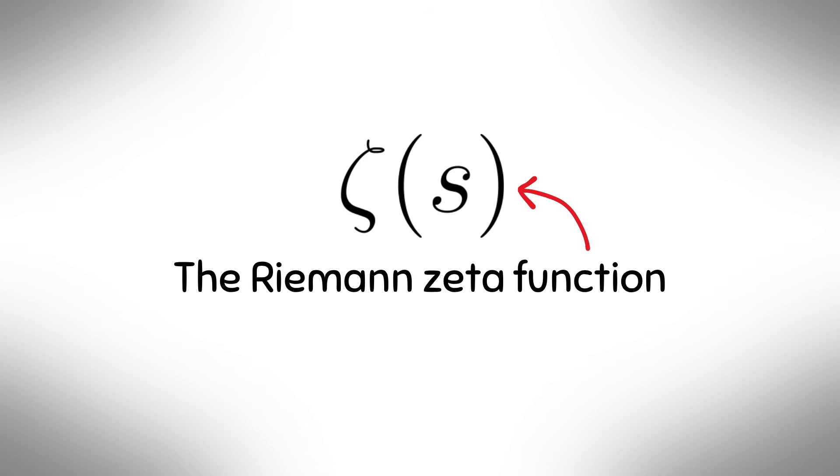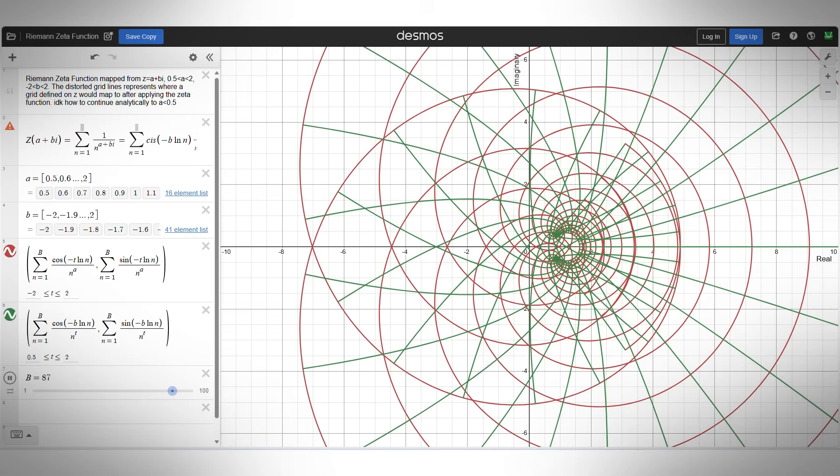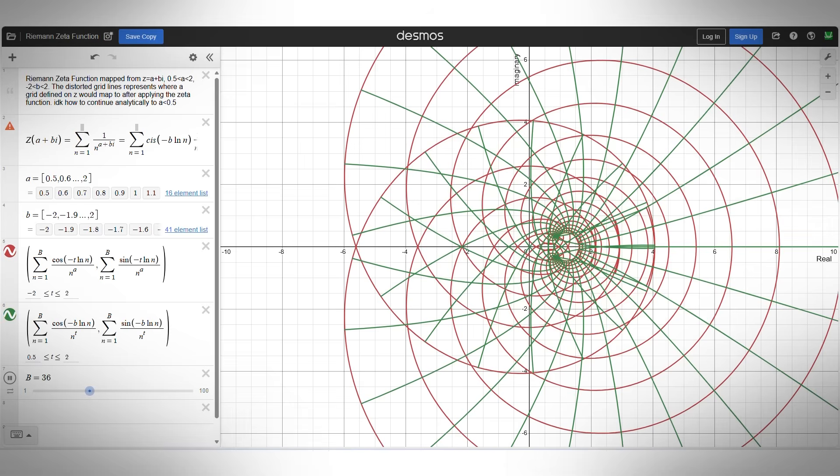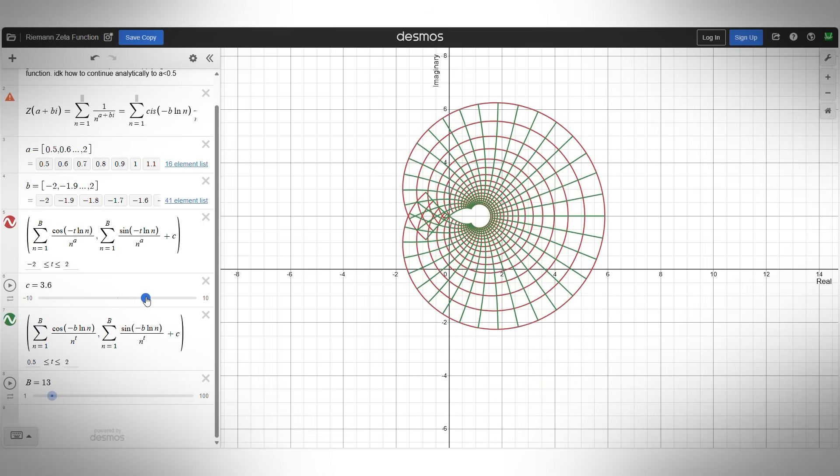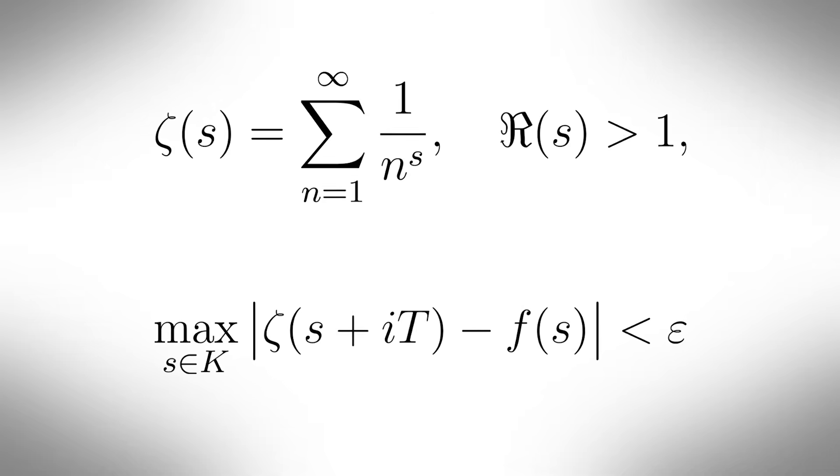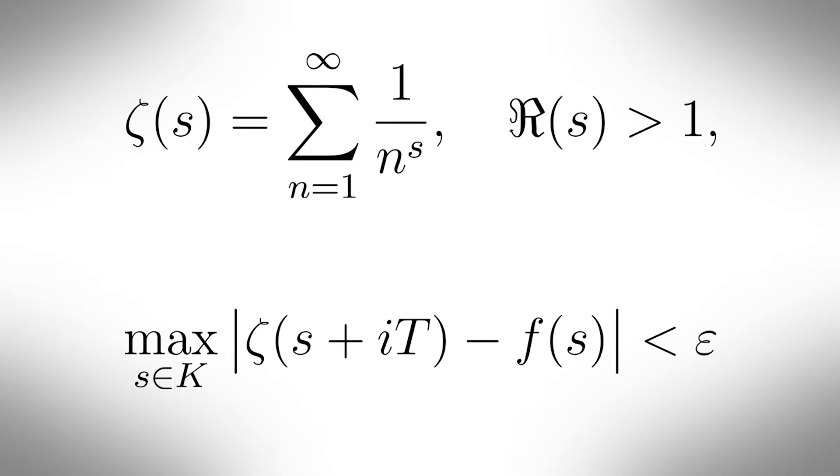Zeta function universality. The Riemann zeta function, usually written as zeta of s, is defined for complex numbers s and encodes information about prime numbers. Roughly speaking, universality means that the zeta function is so rich and flexible that when you shift it vertically in the complex plane, its values can mimic almost any other analytic function. In other words, zeta of s can approximate a wide variety of functions if you look at it along vertical lines in a certain region.